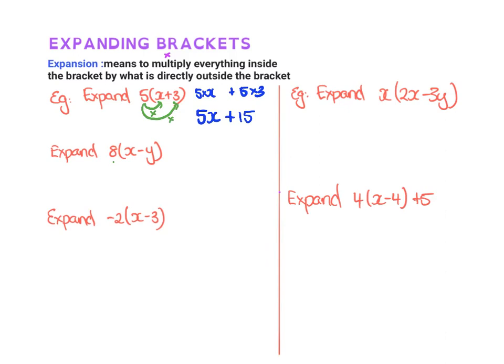So with this next one, we've got to times the 8 by the x and also the 8 by the negative y. So I'm going to have 8x minus 8y.